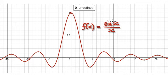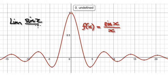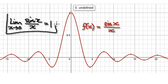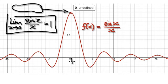Looking at this function here, we can say that the limit of sin(x)/x as x tends to zero equals one. We can make this statement because we know that no matter what degree of accuracy someone specifies, we can keep on edging closer and closer towards zero and eventually we will get it within this level of accuracy.